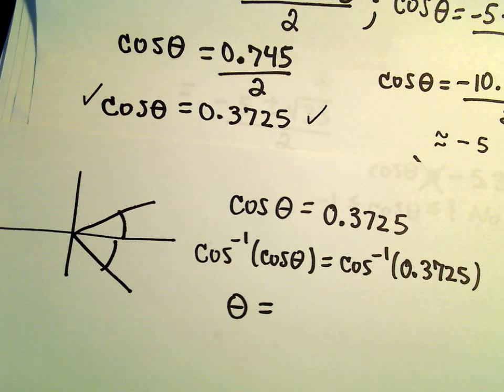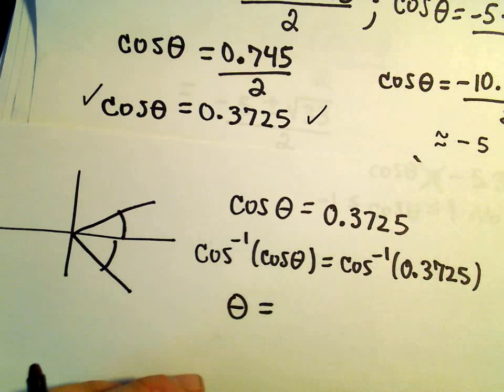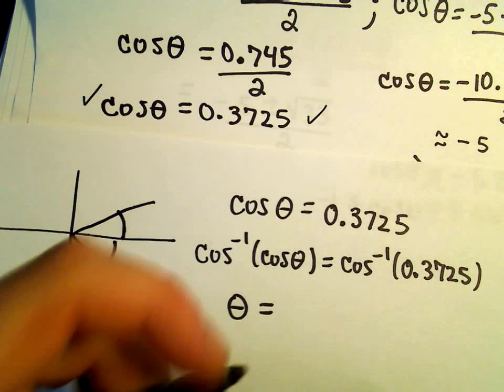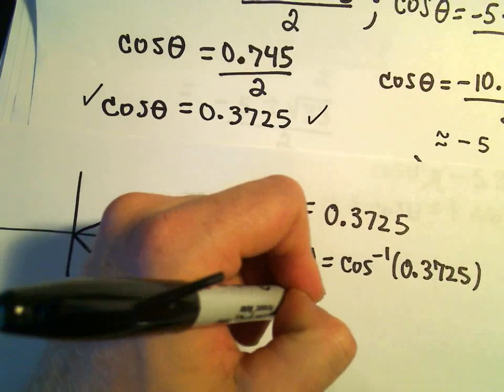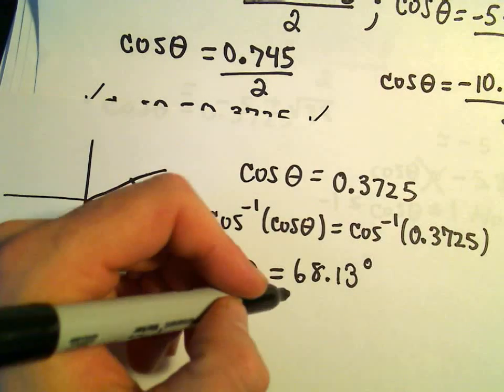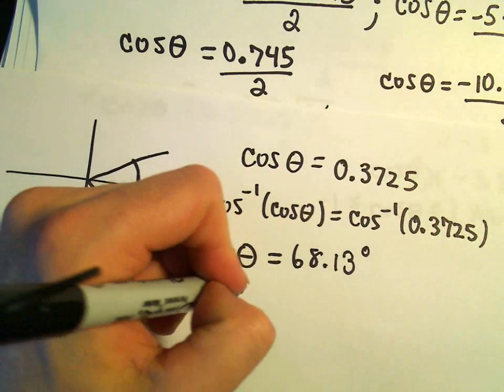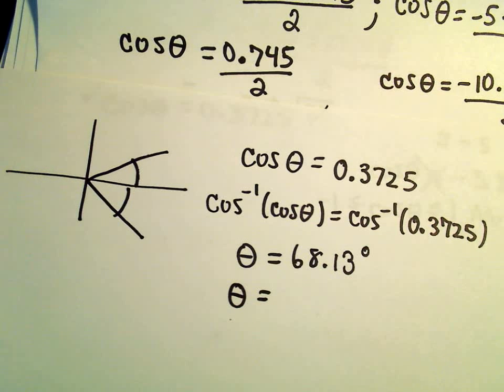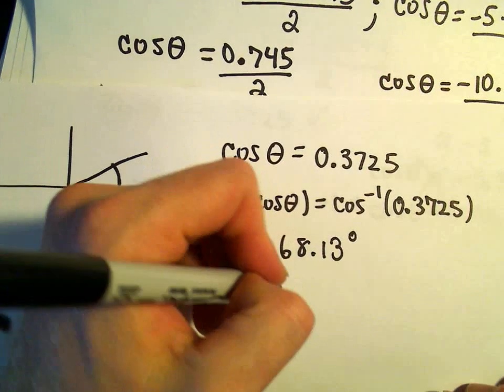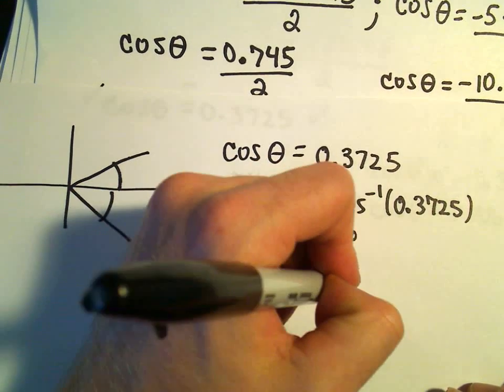Let me check and see what this is. I'm getting 0.3725, I'm going to use the inverse cosine of that. I've got this in radians right now. This is roughly equal to 68.13, excuse me, I've got it in degrees. This was the solution in degrees. And let's do radians. So equivalently, that'll be 1.19 radians.